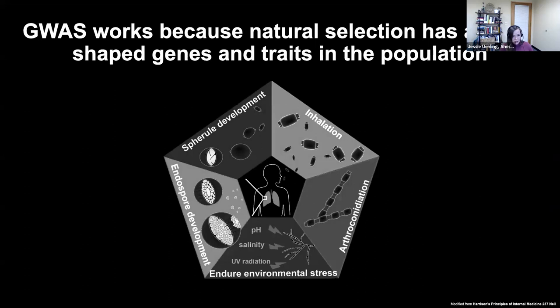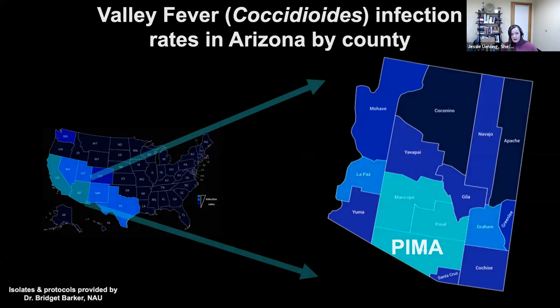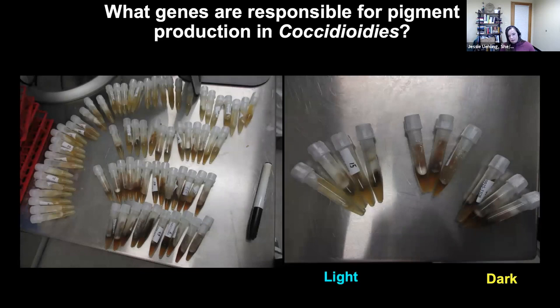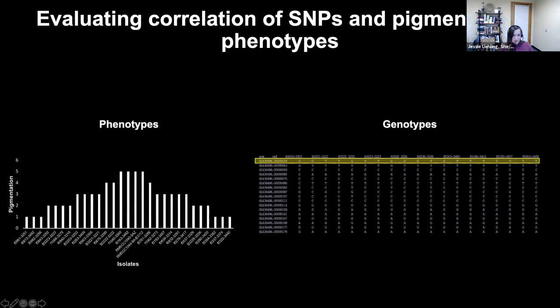We're asking what are the genes that allow these fungi to survive radiation and also live in the human body, and we're doing that by looking at a clinical population from Arizona. Valley fever is centered in Southern California and Arizona. We have this clinical population from Pima County provided to us by Dr. Bridget Barker at Northern Arizona University. We take these isolates into the BSL-3 and note the degree of pigmentation — you can see they're all the same species of fungus, each individual is a novel isolate, and you can see how much they vary in pigmentation from very light to very dark.